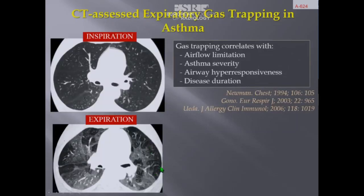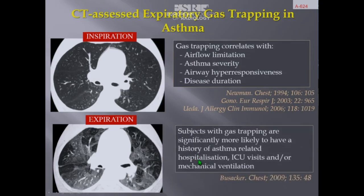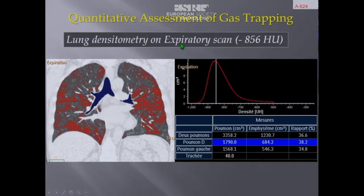Asthma is also an inflammatory disease involving the airways — a heterogeneous condition where 5 to 10 percent of asthmatic patients present severe disease related to changes in airway structure called airway remodeling, involving both bronchi and small airways. Gas trapping correlates with airflow limitation, asthma severity, airway hyper-responsiveness, and disease duration. Subjects with gas trapping are significantly more likely to have a history of asthma-related hospitalization, ICU visits, and mechanical ventilation. Quantitative assessment of gas trapping uses lung densitometry on the expiratory scan.